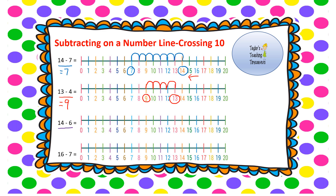Next: 14 take away 6. Find 14 on your number line and go backwards 6 spaces: 1, 2, 3, 4, 5, 6. We've landed on 8, so 14 take away 6 equals 8. Finally: 16 take away 7. Find 16 on the number line and jump back 7 spaces: 1, 2, 3, 4, 5, 6, 7. We've landed on 9, so 16 take away 7 equals 9.